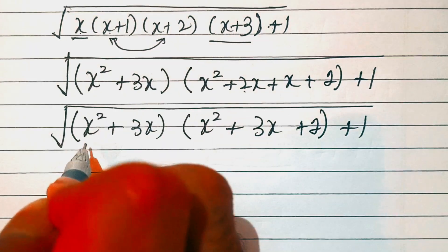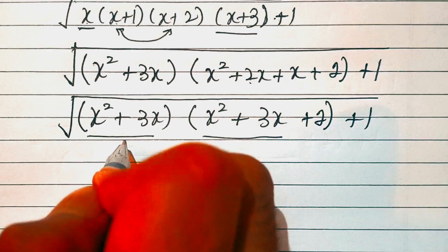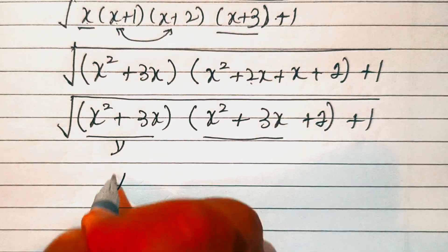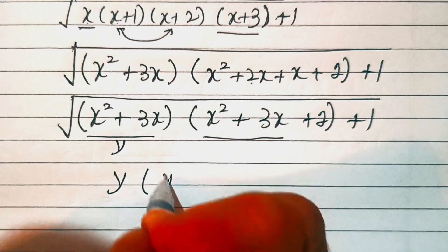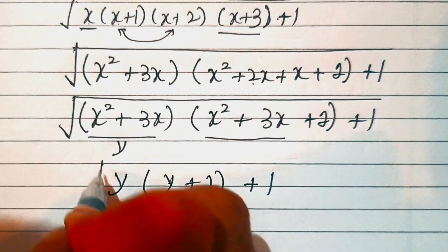Now we have x squared plus 3x here and x squared plus 3x here as well, so let's make this as y. We have y into y plus 2 plus 1, whole square root.